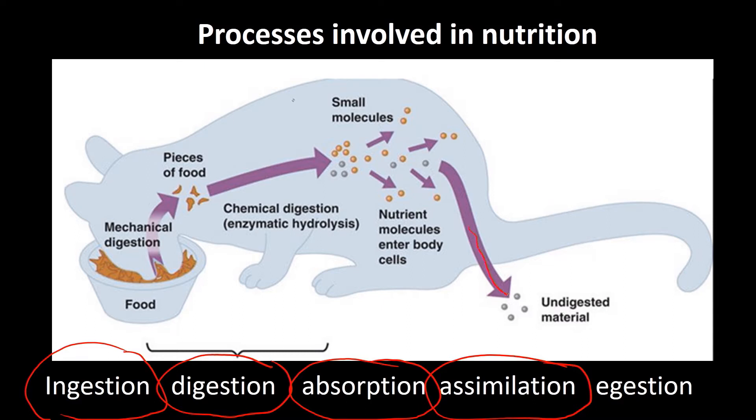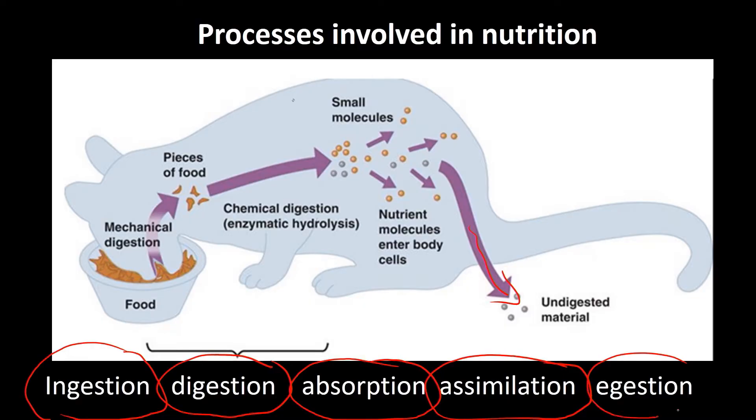There will always be some bits in the food we eat that our bodies can't digest, and those undigestible bits get passed out in the process of egestion. As food moves along the digestive system, all of these processes are going to happen.